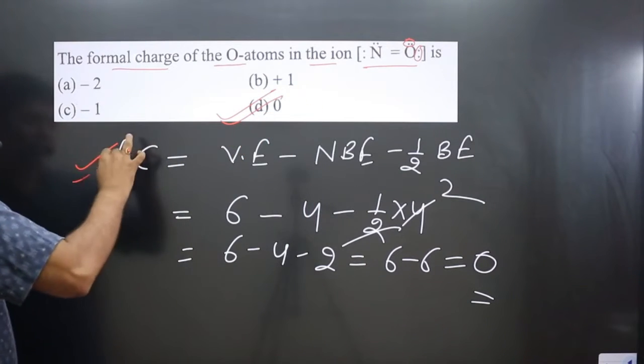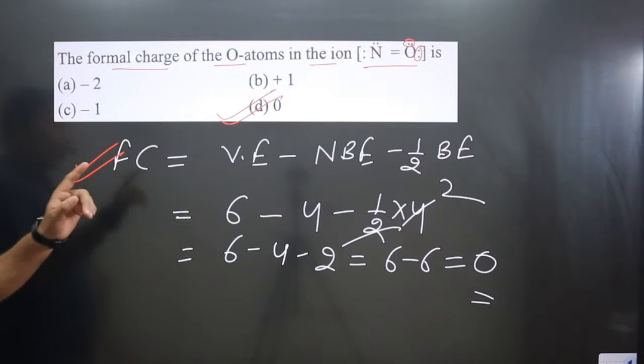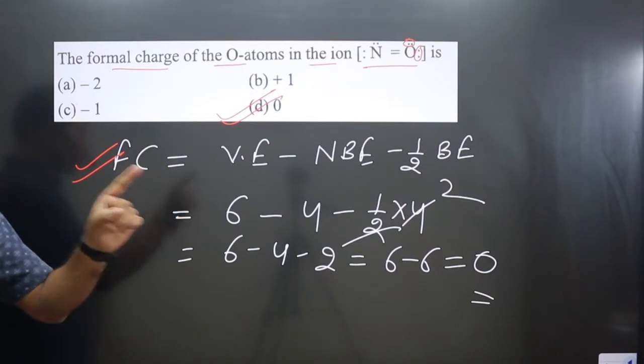Remember this formula: formal charge equals valence electrons minus non-bonding electrons minus one-half bonding electrons. If you like this video, please share and subscribe to the channel.